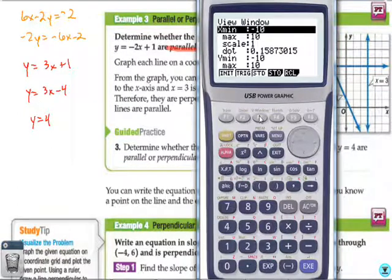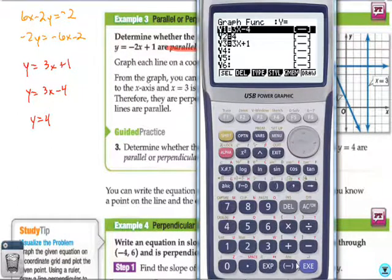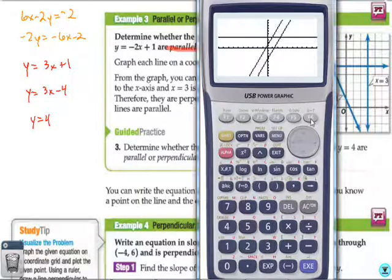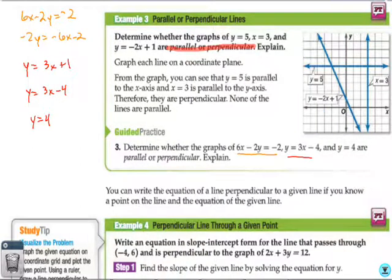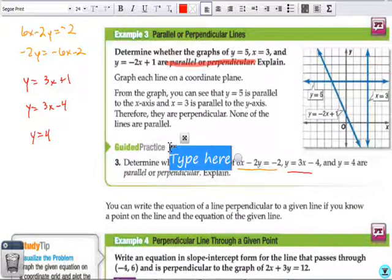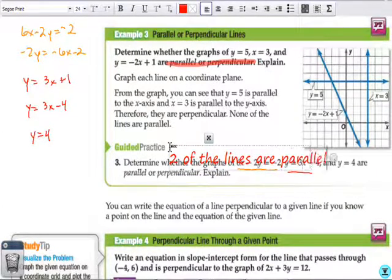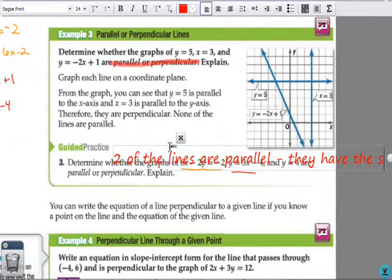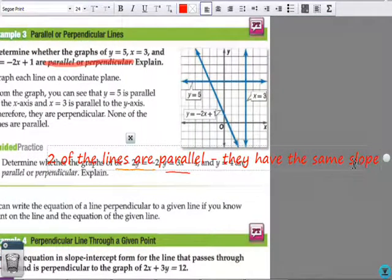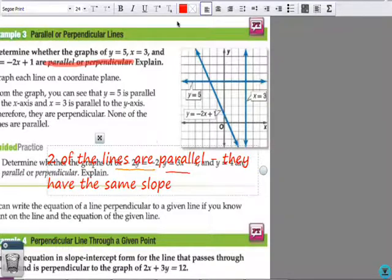If your view window isn't right, hit F3 in standard or if you're in a TI, just hit zoom 6. Okay. And, what I get is none of the lines are perpendicular but it does appear as though these two lines are parallel. So, I can say that the two lines are parallel they have the same slope. Okay. Two of the lines are parallel because they have the same slope.